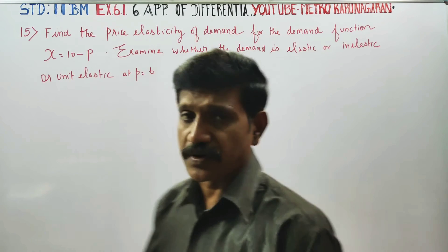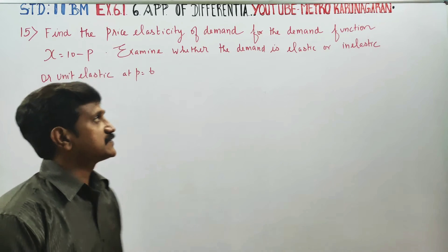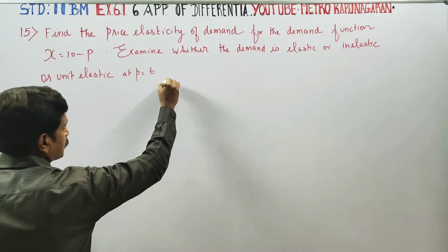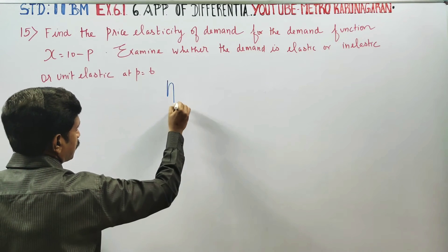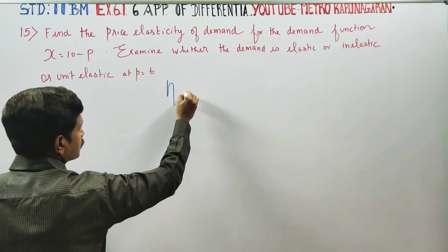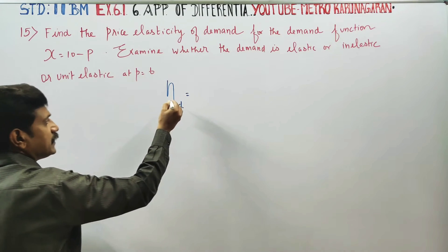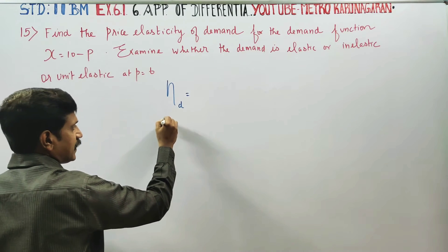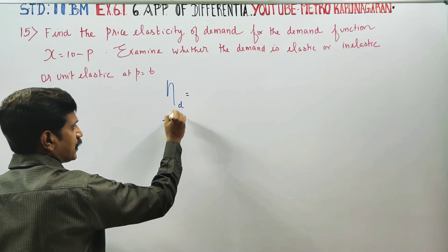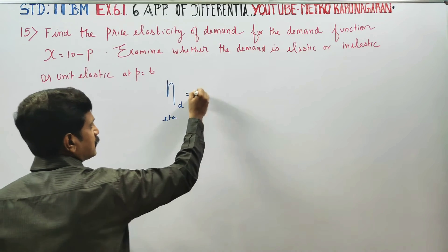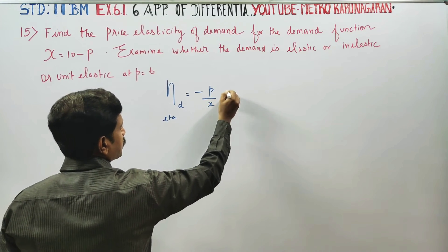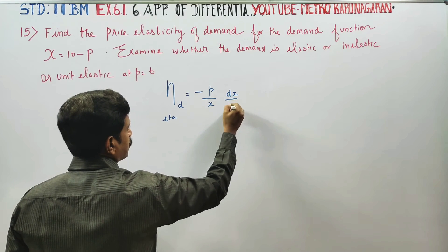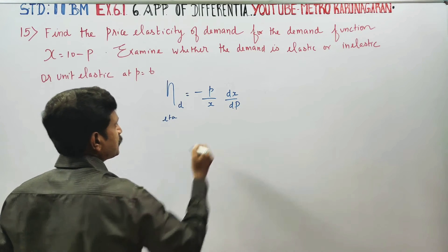For elasticity of demand, the elasticity of demand is denoted as eta D. The actual pronunciation is eta. Eta D equals p by x into dx by dp. This is the elasticity of demand formula.